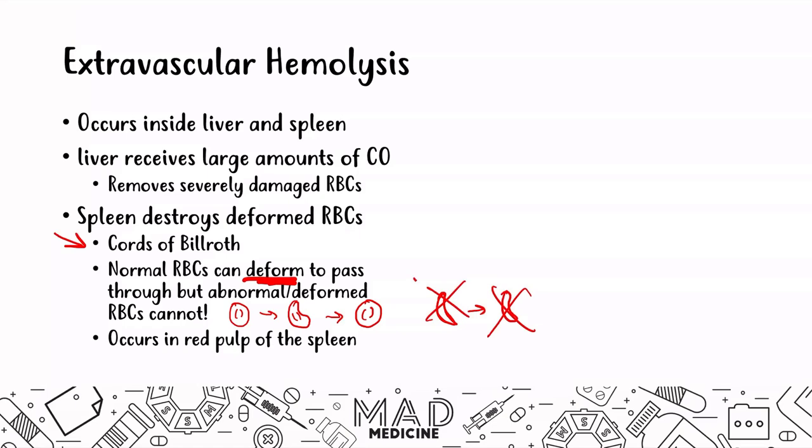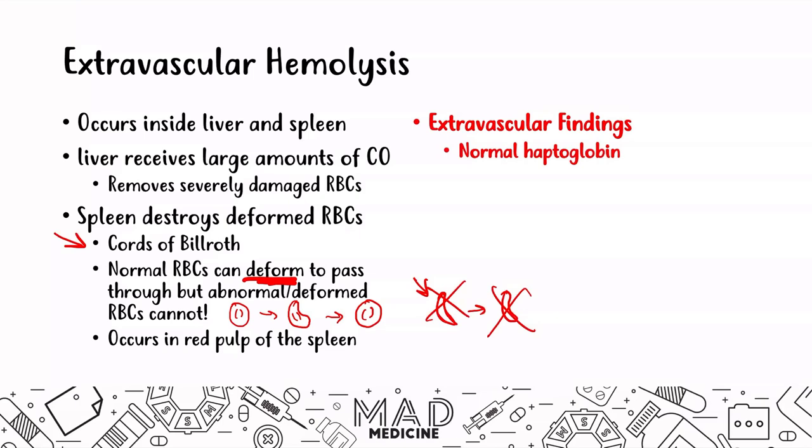Extravascular hemolysis is closely associated with intrinsic causes of hemolysis. In sickle cell, there is an issue with the cell membrane due to a valine to glutamic acid substitution in the beta hemoglobin chain, causing abnormal hemoglobin to precipitate — an intracellular, intrinsic hemolytic problem. When it comes to extravascular hemolysis findings, you're going to see normal haptoglobin. Haptoglobin is the molecule that binds to hemoglobin in the bloodstream; normally hemoglobin is not floating freely — it is always within red blood cells. You will mainly see decreased haptoglobin in intravascular hemolysis.